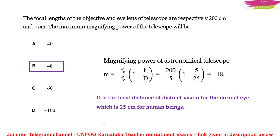The main point to remember is that the magnifying power of an astronomical telescope carries a negative sign. For more details, you can watch the optics classes on this YouTube channel — all classes are free, and the playlist link is in the description. Please like the video if you enjoy my work, and subscribe for more such expected questions.